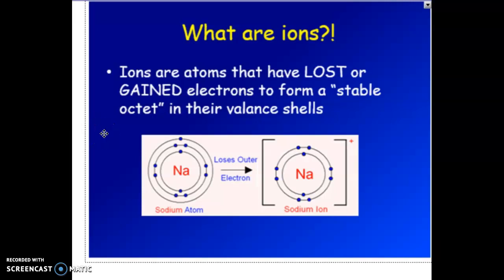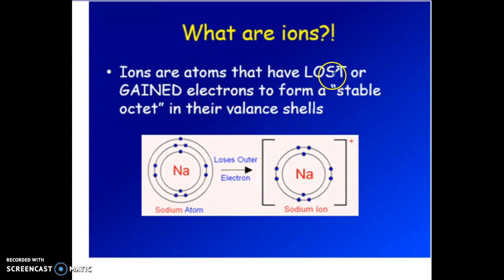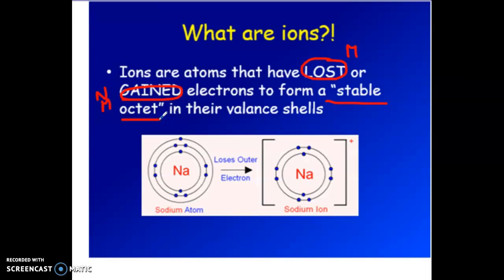We're going to continue our talk about ions — essentially what makes an ion, how do we know what the charges will be, and what happens if we want to draw an ion. Ions are essentially when atoms have either gained or lost electrons. Metals will lose electrons, and non-metals are going to be the ones that are gaining. The whole point of creating an ion is to create a stable octet — the outermost shell needs to be completely full. This is a simplified picture, not a true Bohr-Rutherford because there are no protons and neutrons shown.